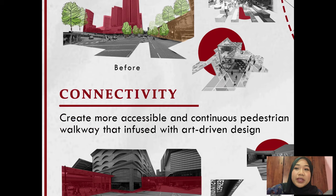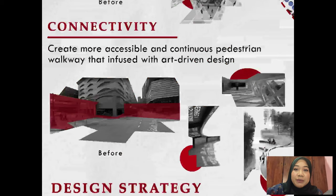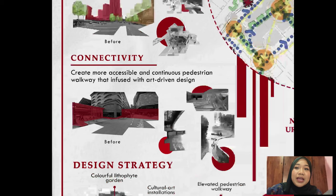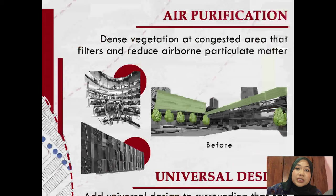Third, to create a more accessible and continuous pedestrian walkway that is infused with art-driven design. As you can see in the before image, there is discontinuity of pedestrian walkway that discourages people from travelling from one place to another. Examples include making it sheltered against heavy rain and direct sun, and widening the path. It is also suggested to reinforce linear movement with strong vertical and horizontal vegetation along the road. Fourth, it is suggested to have a natural buffer that acts as air filtration and purification. Approaches include having dense vegetation especially at congested areas to reduce airborne particulate matter, introducing vegetation with broader leaves to trap pollution that will be washed off during rain, and having vegetation that can modify ground plane, vertical plane and overhead plane to dramatise views and alter users' perception.